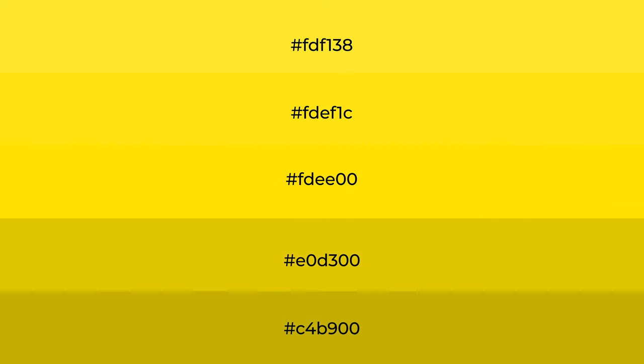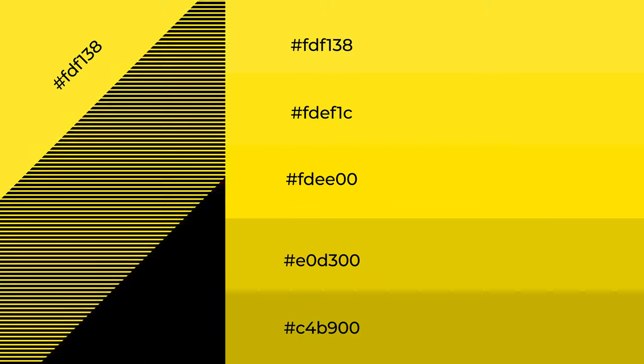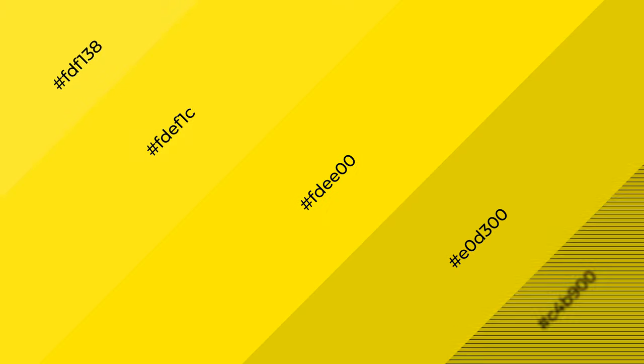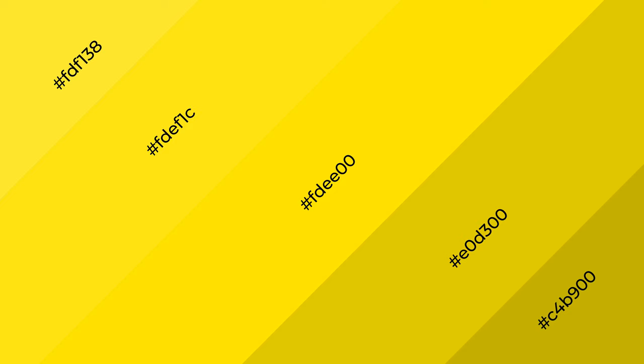To generate shades of a color, we add black to the color, and it is used in patterns, 3D effects, and layers. Shades create depth and drama. Aureolin is a warm color and it emits cozier and active emotions.